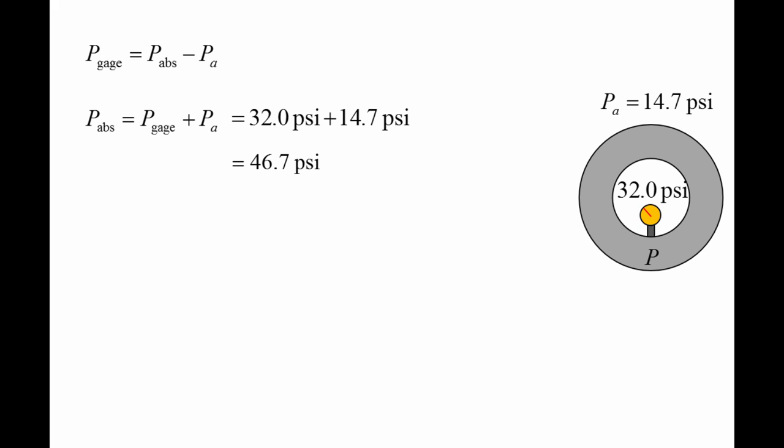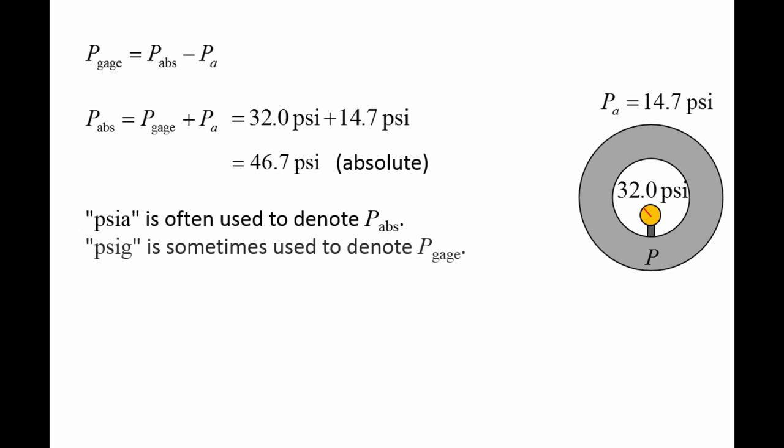When writing a pressure down, it is important to specify whether you are using absolute pressure or gauge pressure. In the British gravitational unit system, sometimes the letter A is added to the end of psi to indicate an absolute pressure, and sometimes the letter G is added to the end of psi to indicate a gauge pressure.